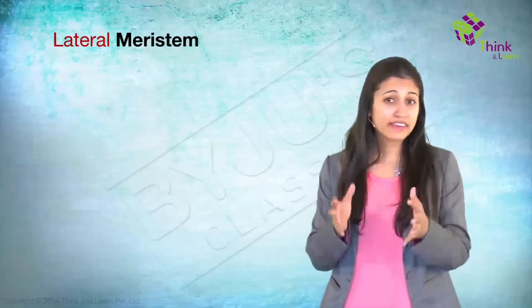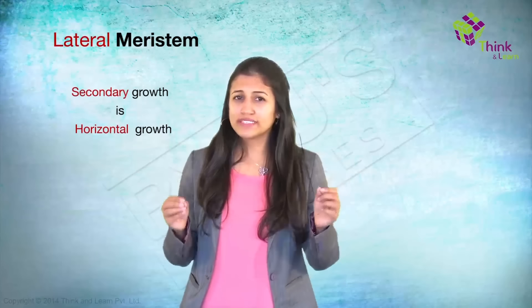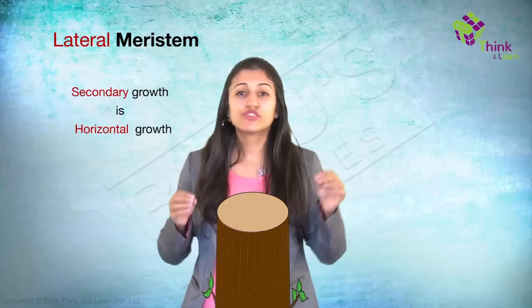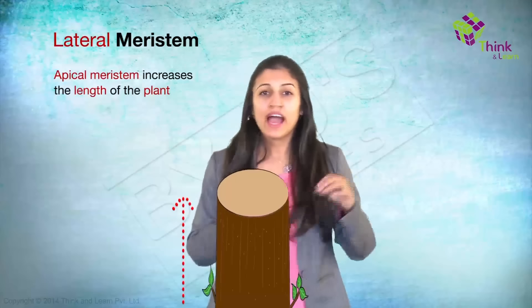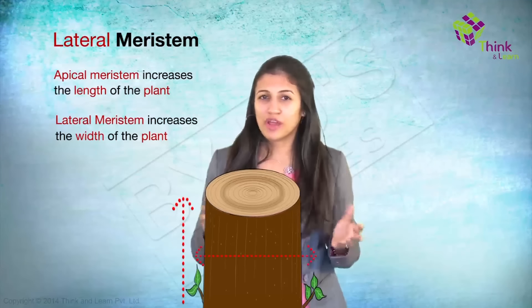Okay, the lateral meristem. Lateral meristems account for secondary growth in plants. Secondary growth. Any guesses? Yes, it's generally horizontal growth. A good example would be the growth of a tree trunk in girth. The apical meristem was for increasing the length of the stem and the root. And the lateral meristem increases the girth or the width of the plant.